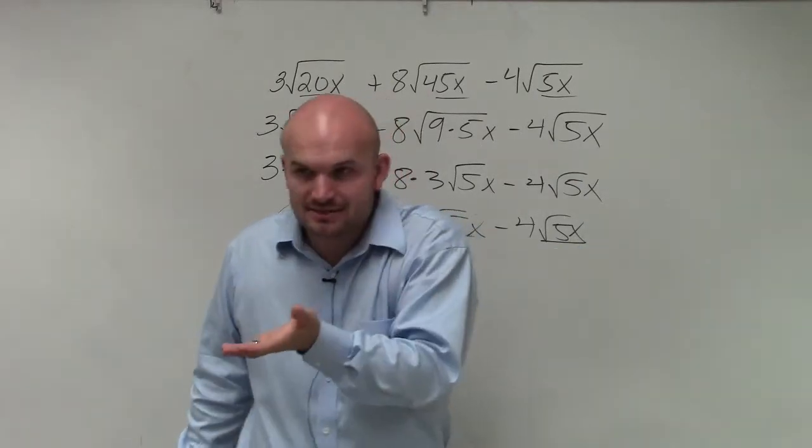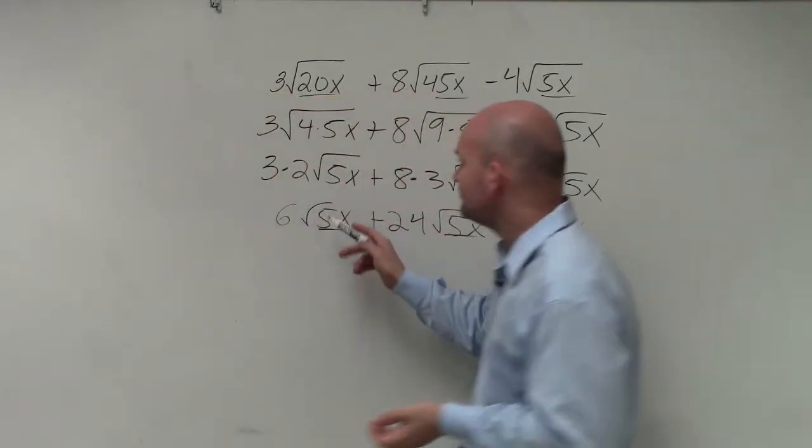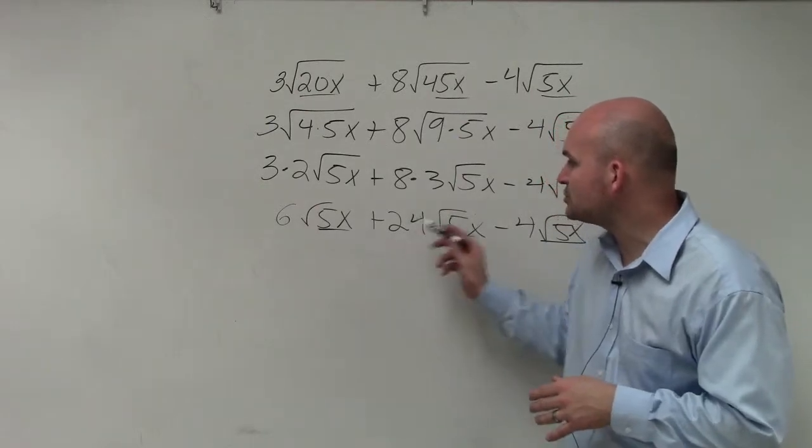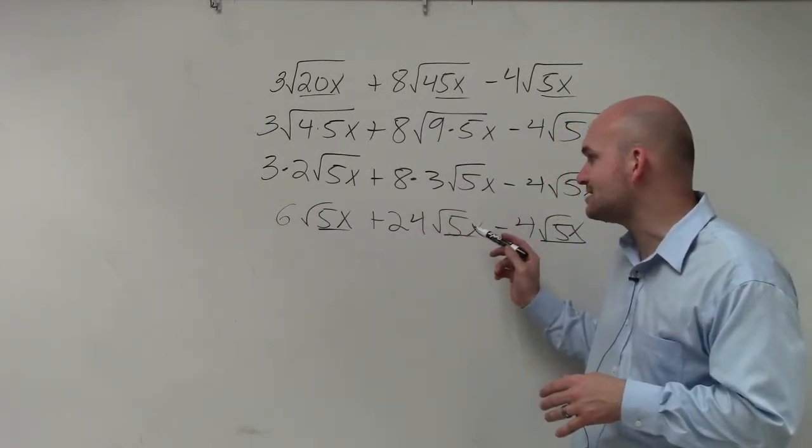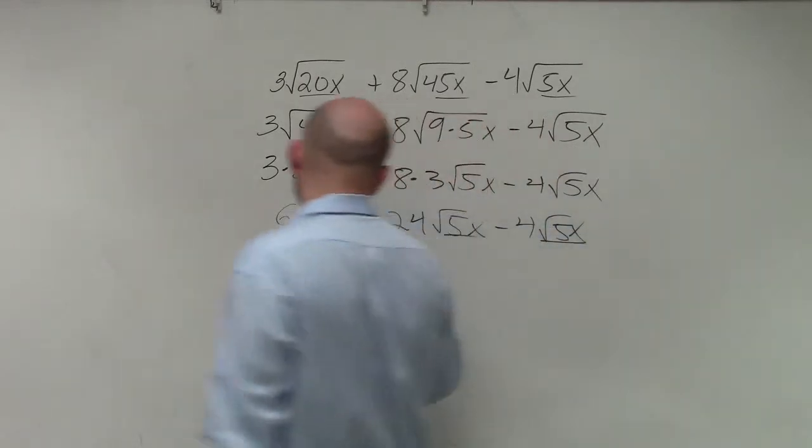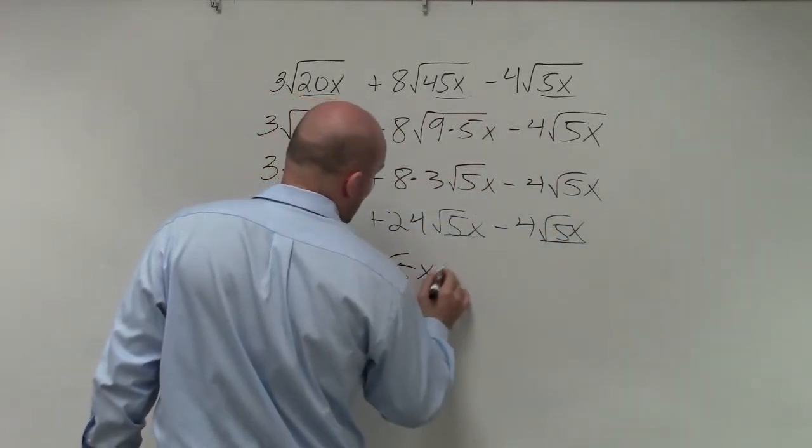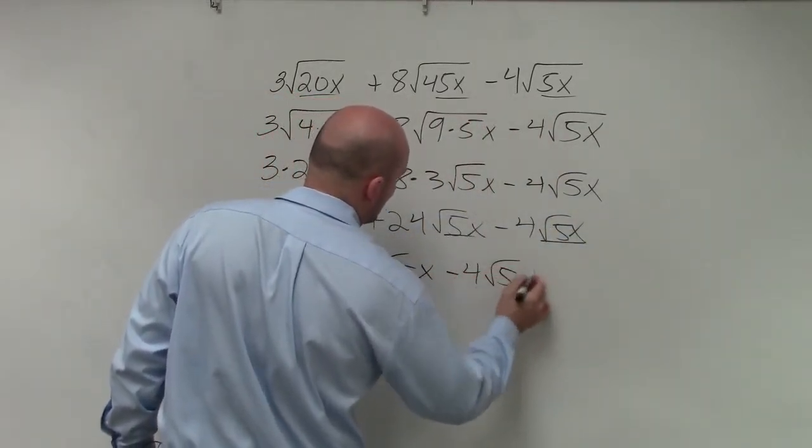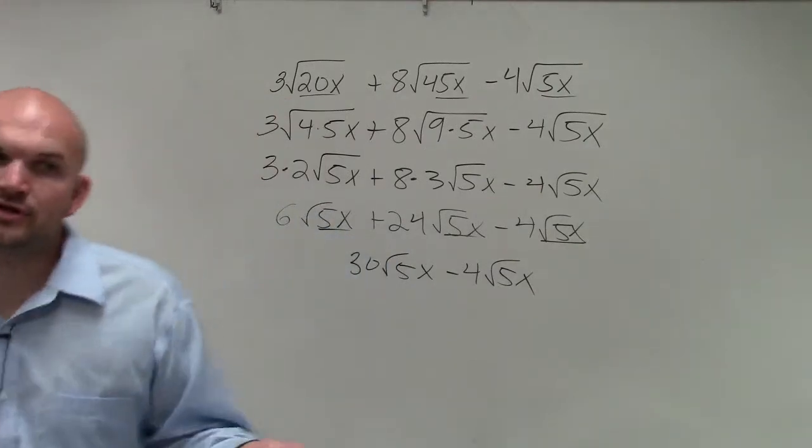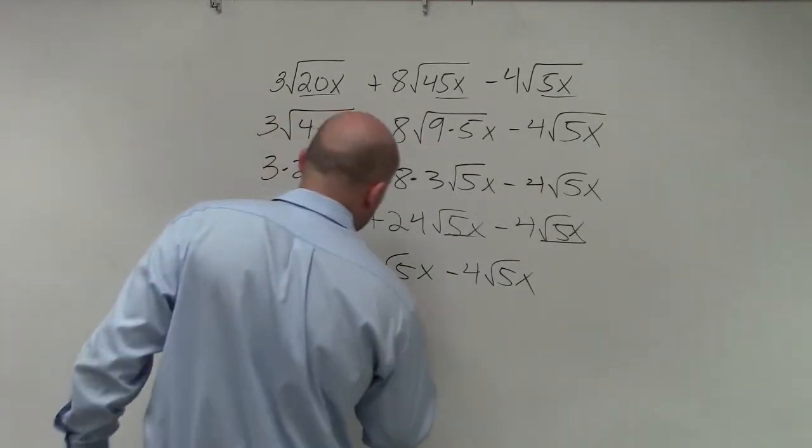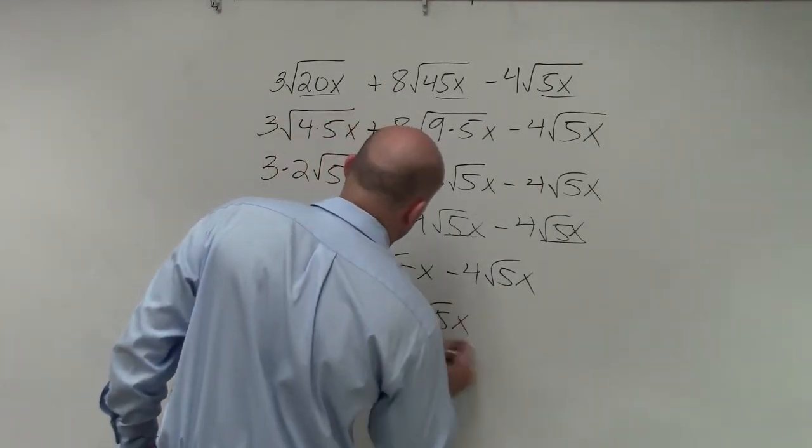We didn't change the x. So 6 times the square root of 5x plus 24 times the square root of 5x is 30 square root of 5x minus 4 square root of 5x. Now, 30 minus 4 is 26 square root of 5x.